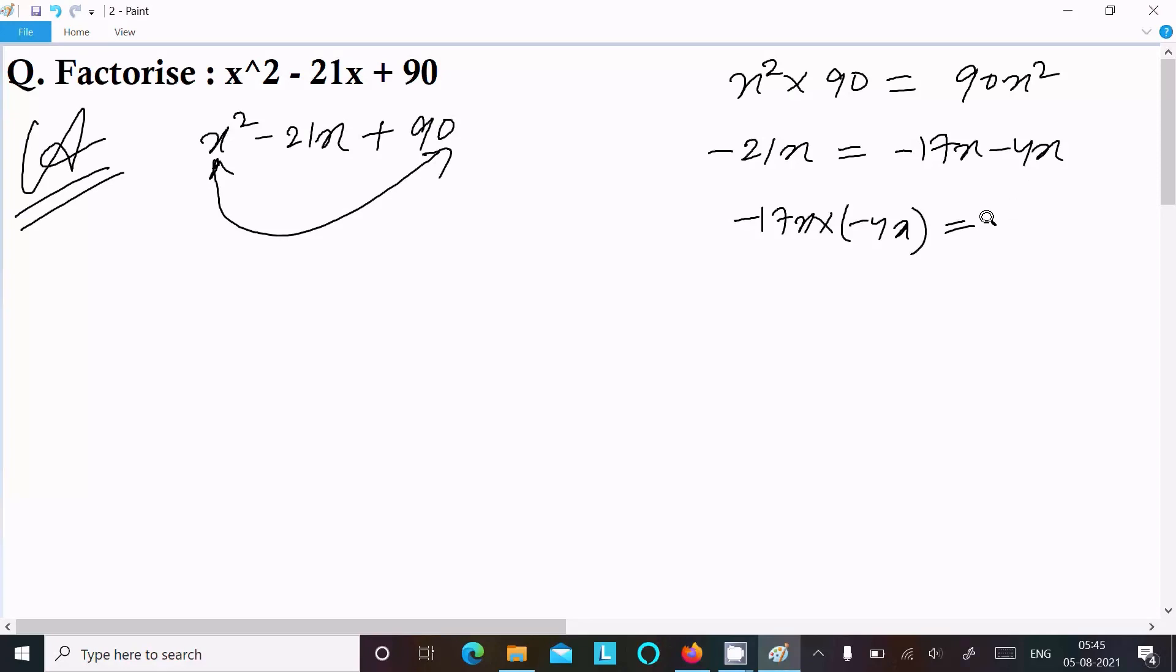Minus minus plus, 4x into 7 is 28, here 4 plus 2, 68 here x². So 90 and 68x² both are not equal, so this is also rejected.